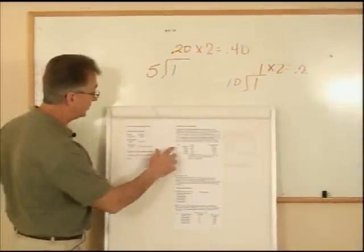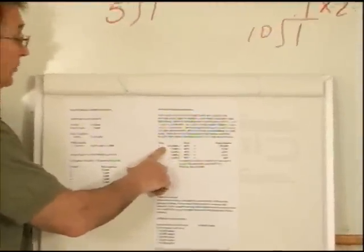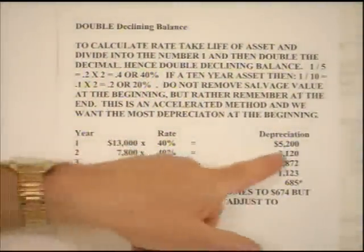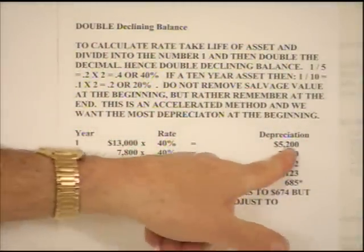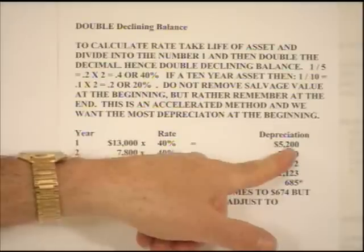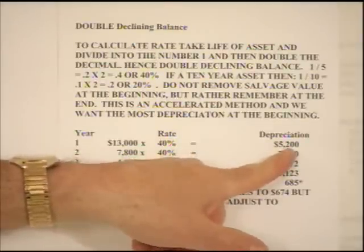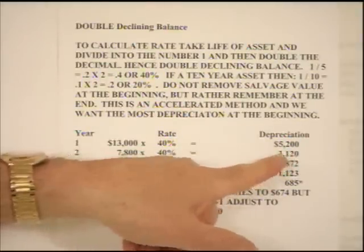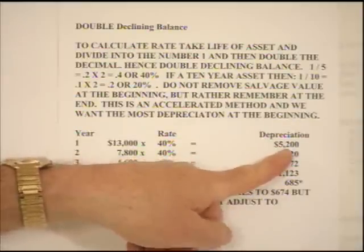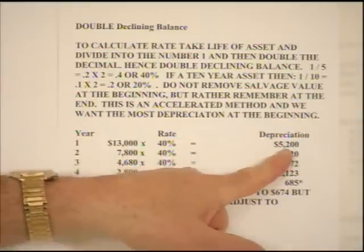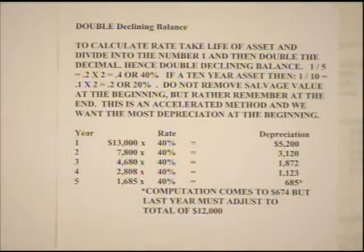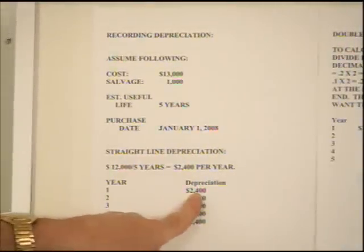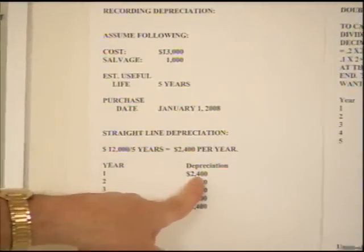Coming back to this calculation now for double declining balance, we can see the $13,000 times 40%, and that gives us $5,200. This is assuming that we purchased this asset the first of the year, so we can take the whole $5,200. If we go back to straight line, notice that we only took $2,400. That is a radical difference.